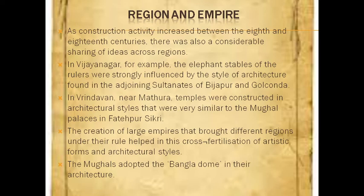In Vrindavan near Mathura, temples were constructed in architectural styles very similar to the Mughal palaces in Fatehpur Sikri. The creation of large empires that brought different regions under one rule helped in the cross-fertilization of artistic forms and architectural styles. The Mughals also adopted the Bangla Dome in their architecture.